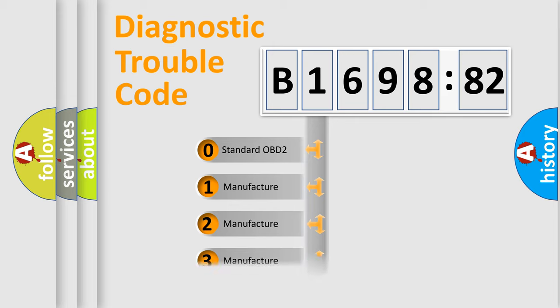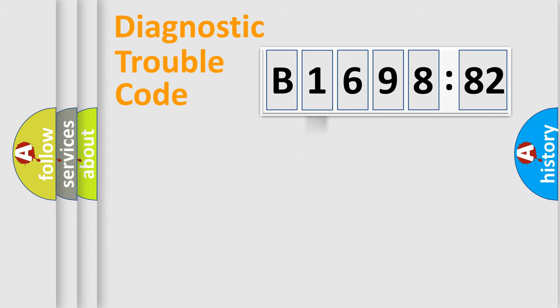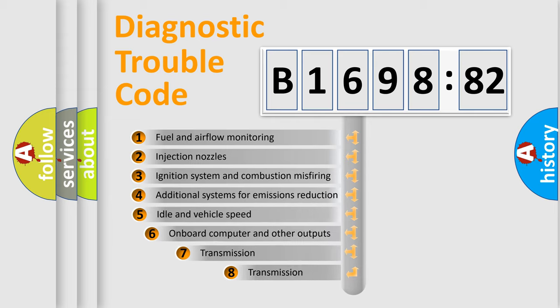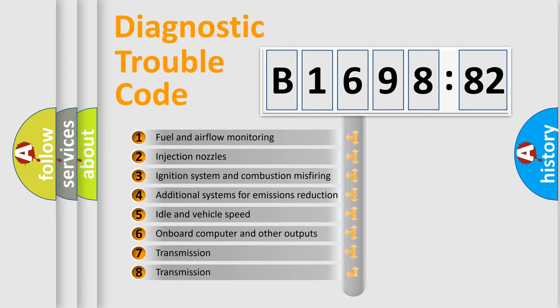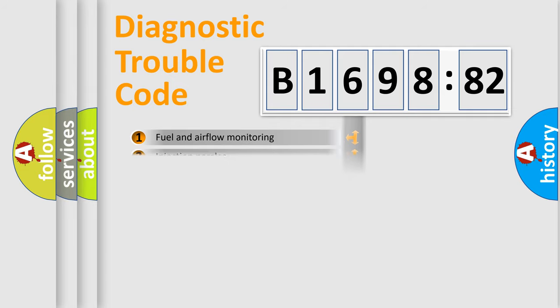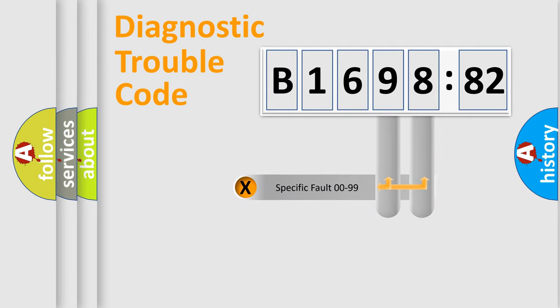If the second character is expressed as zero, it is a standardized error. In the case of numbers 1, 2, or 3, it is a more prestigious expression of the car-specific error. The third character specifies a subset of errors. The distribution shown is valid only for the standardized DTC code.